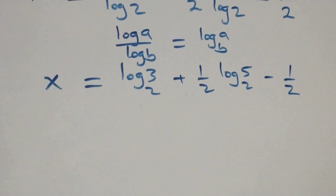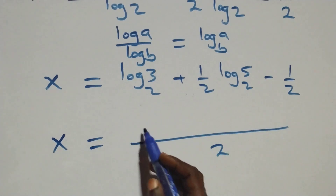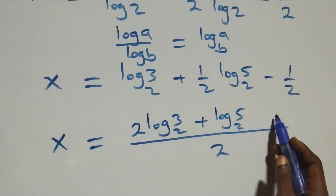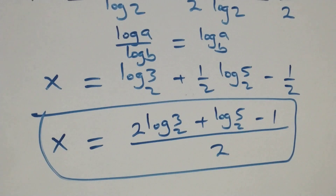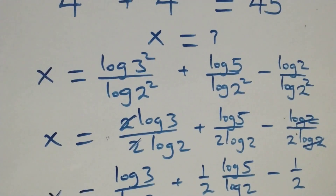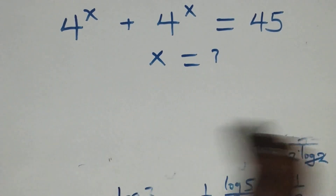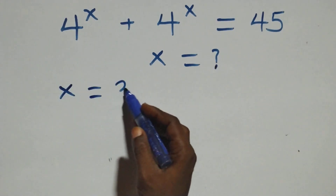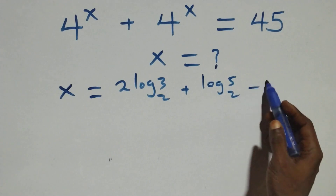Combining into a single fraction over 2, x equals 2 log₂3 plus log₂5 minus 1, all over 2. So the value of x is (2 log₂3 + log₂5 − 1) / 2.